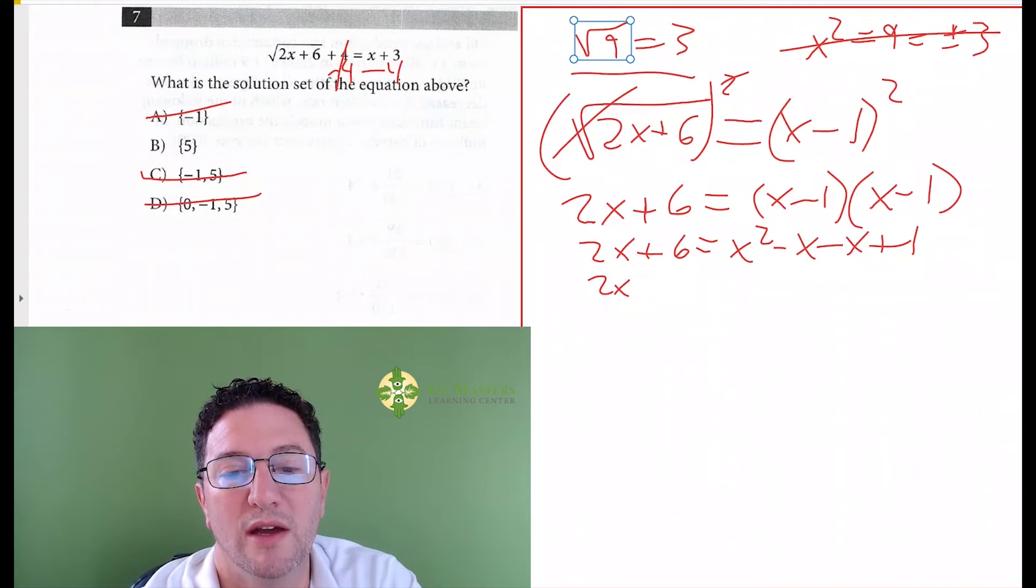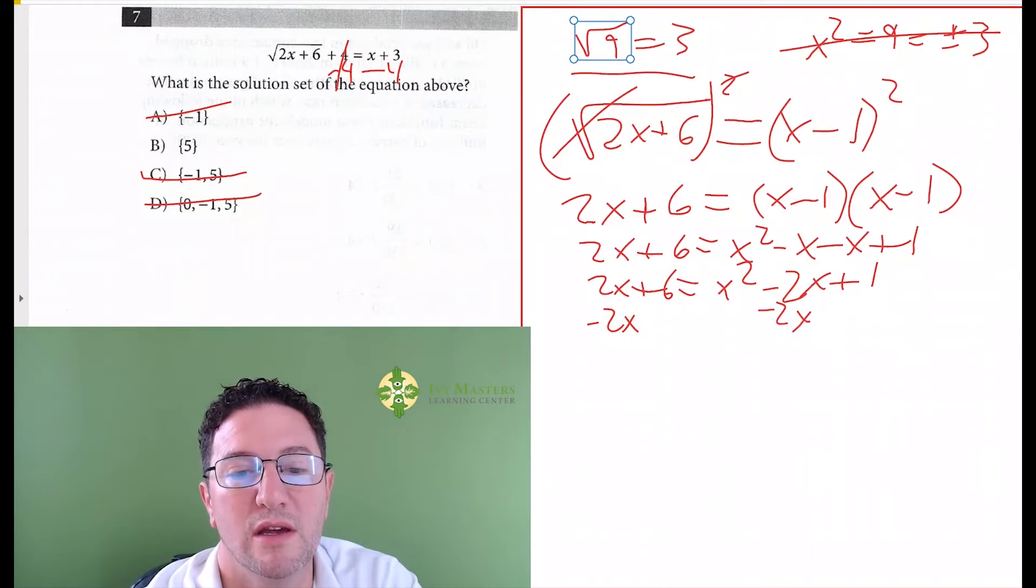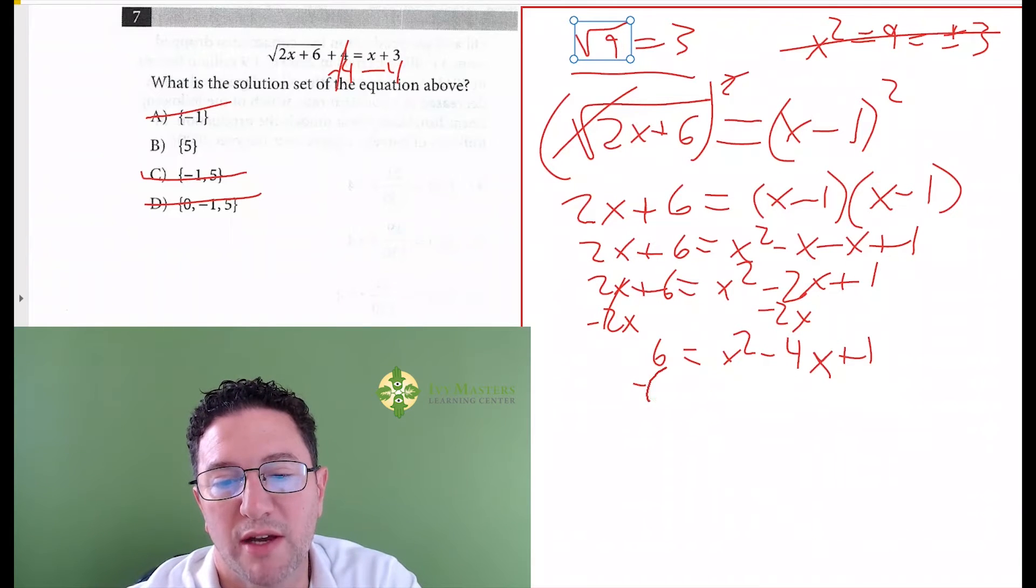And then you subtract your 2x from both sides. These cancel, you get 6 equals x squared minus 4x plus 1. And then you subtract your 6 from both sides because quadratics should always be set equal to 0. You get x squared minus 4x minus 5 equals 0.